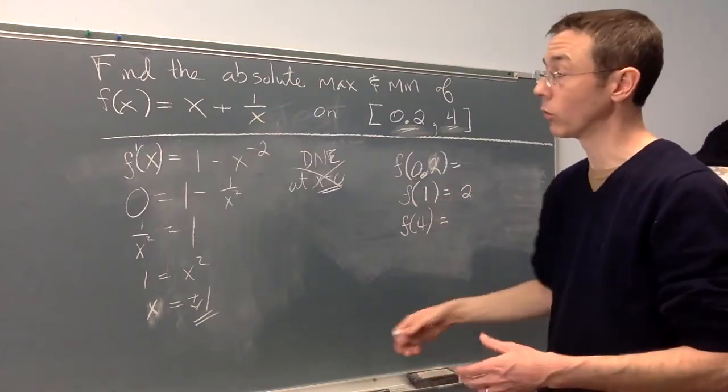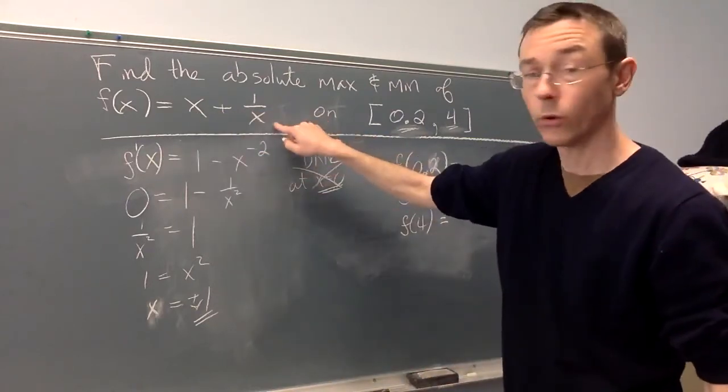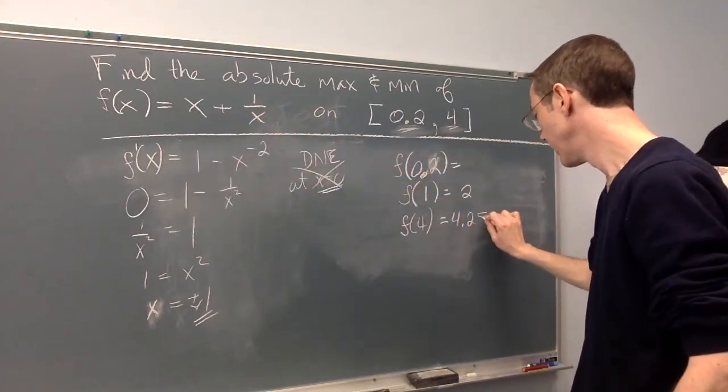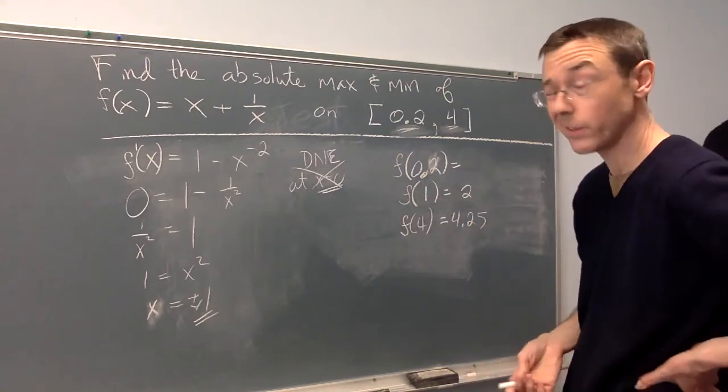f(4), not much worse. 4 + 1/4. Let's write 4.25. Might be easier to compare decimals than fractions, potentially.